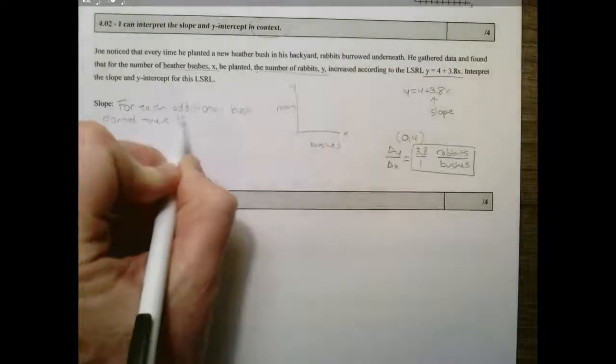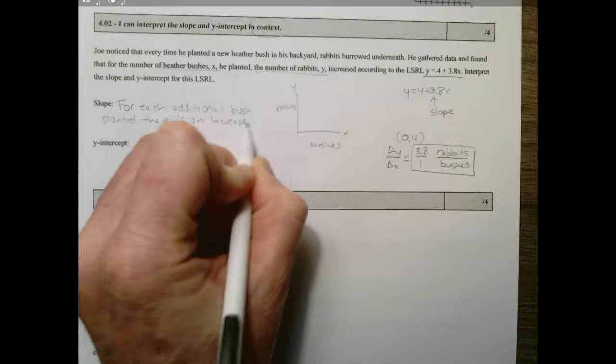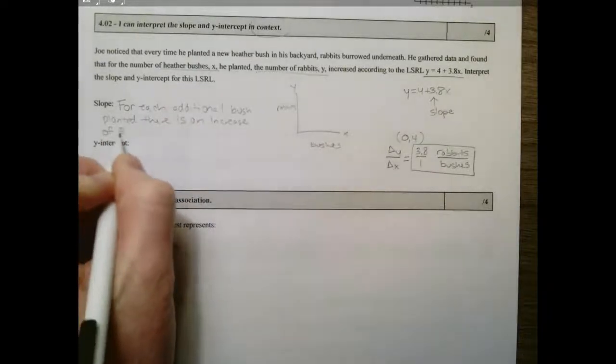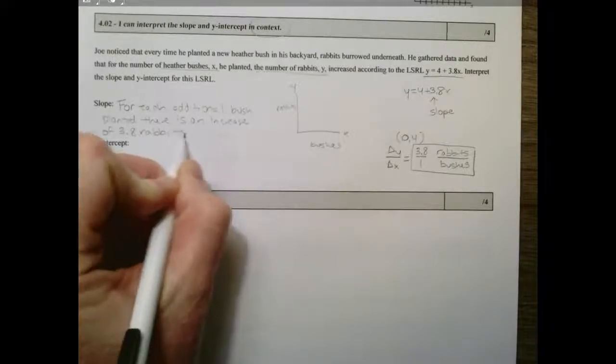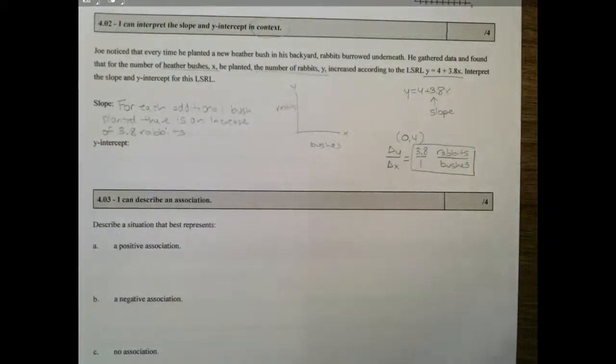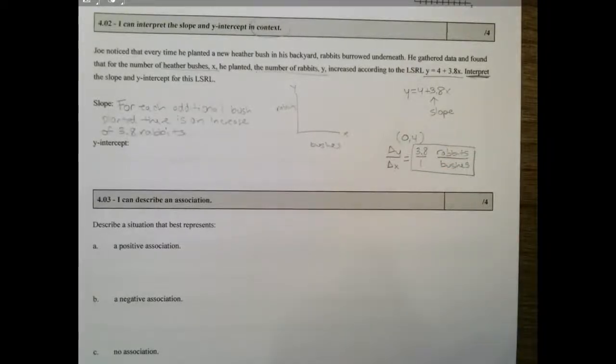You can't just say 3.8 is the slope when you're being asked to interpret in context. To interpret, you have to tell the person what this 3.8 is.